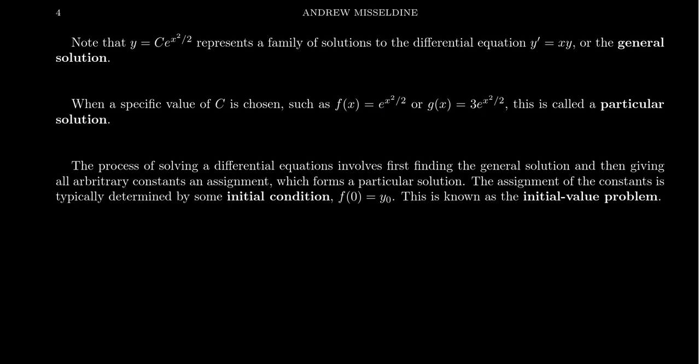Well, if you have a general solution in hand, what you can do is you can use some initial condition. That is, you know something about the function. Like, maybe you know f of 0 is equal to some specific number - we'll call it y naught. And so if we have a general solution, we can find the particular solution using some initial condition, some initial value. And this is often referred to as the initial value problem.